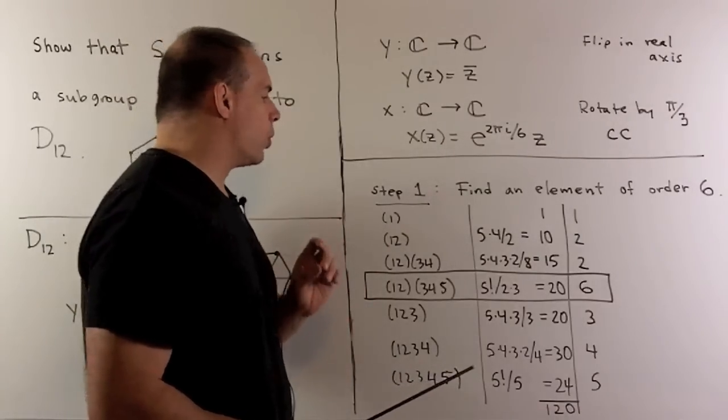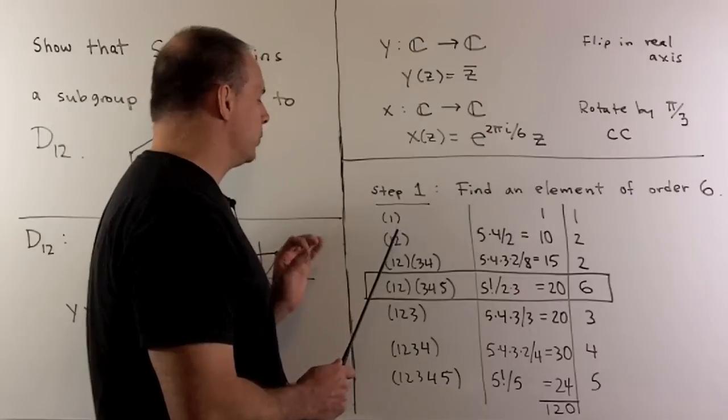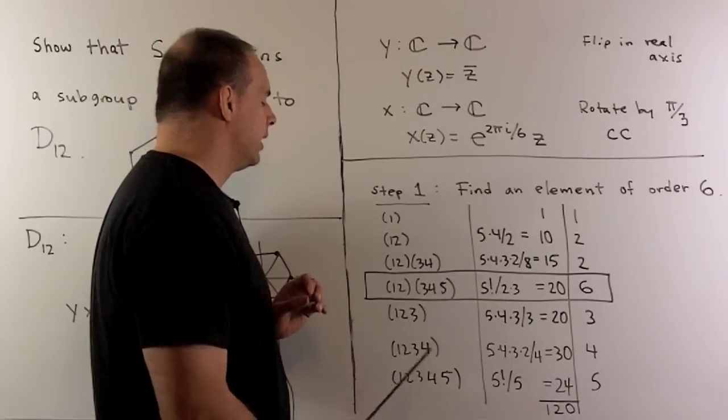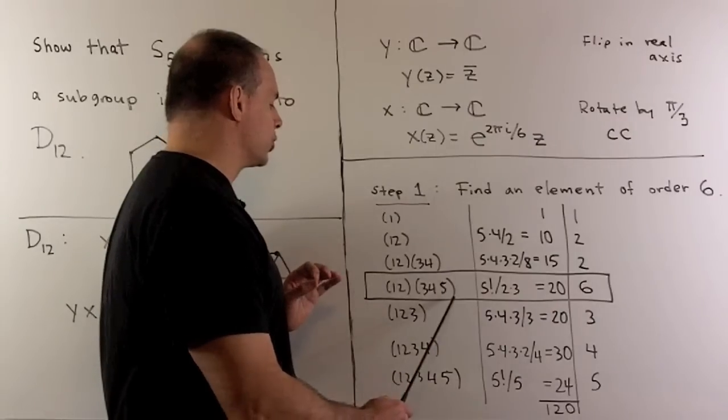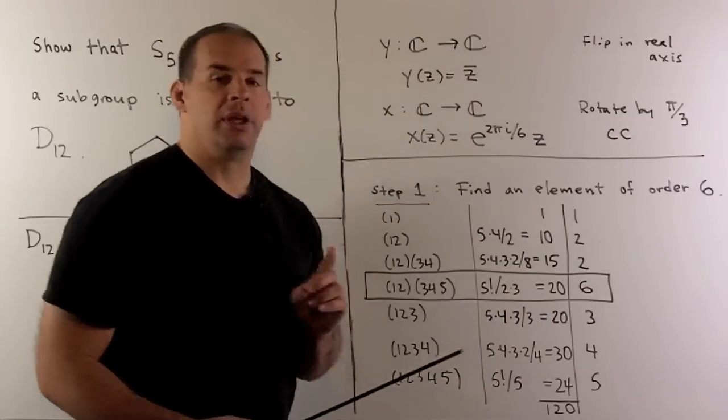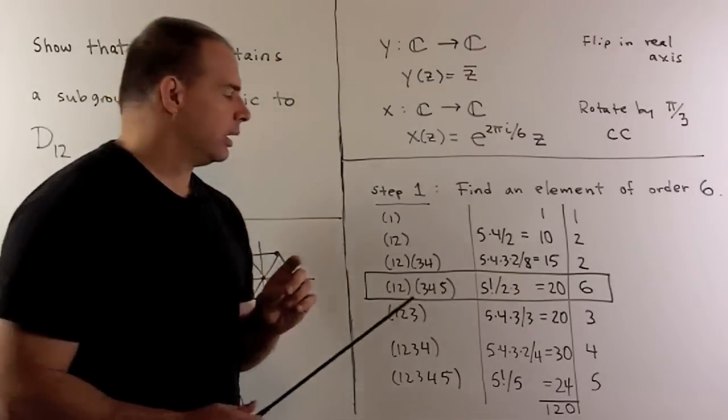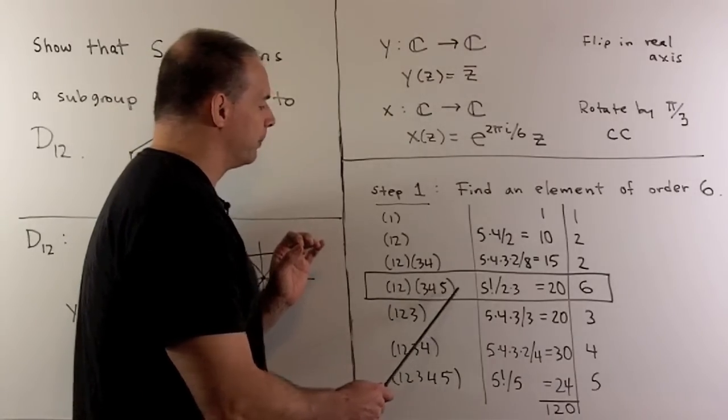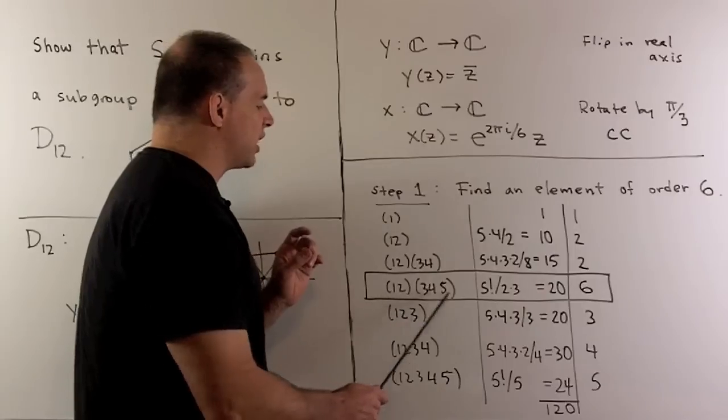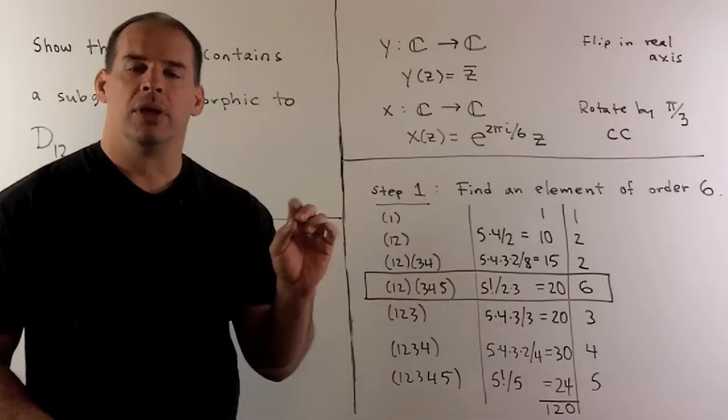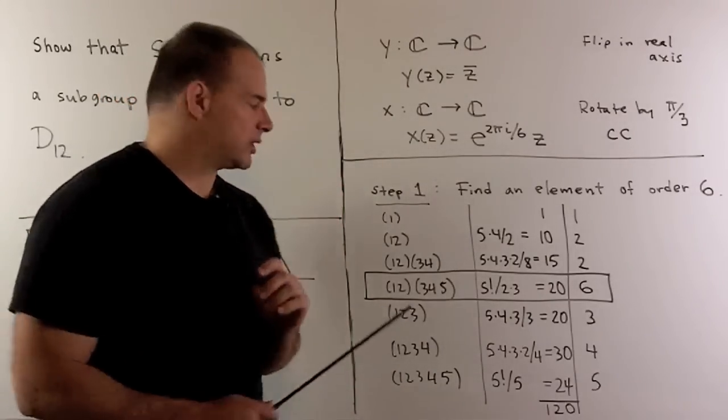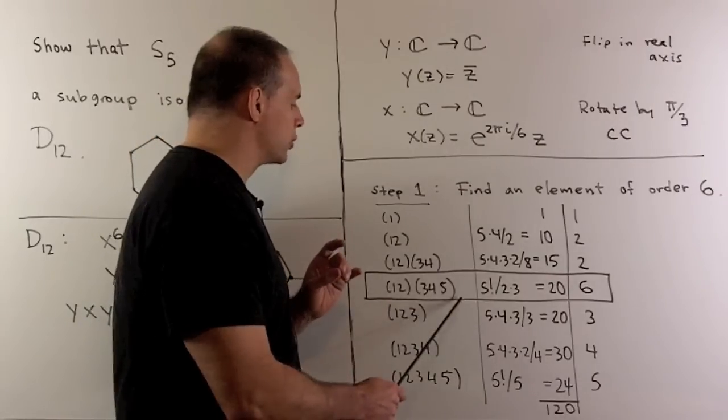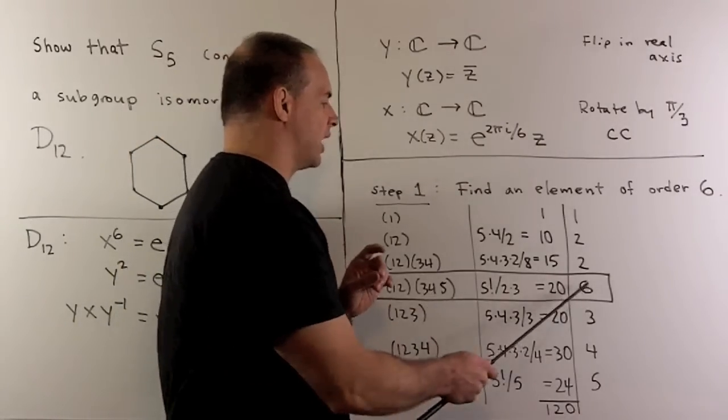Now for checking orders, the easy ones: we have 1, 2, 2, 3, 4, 5. Then here we're going to have element of order 6. You can either check that by hand, or here we have a product of cycles that's disjoint. The order of each cycle is relatively prime to the other, so the order of this permutation is going to be the product of the cycle orders. That means two times three gives us a six.